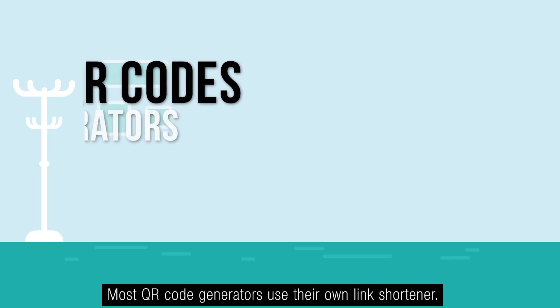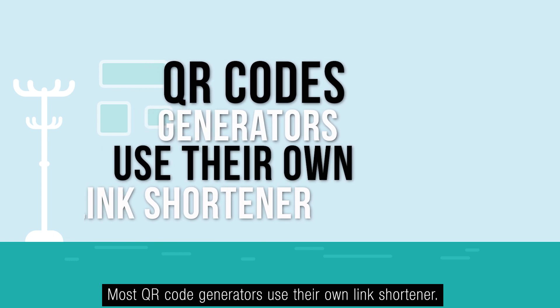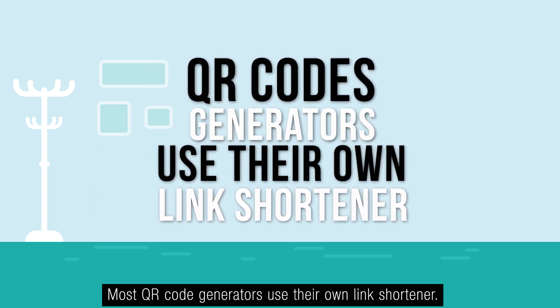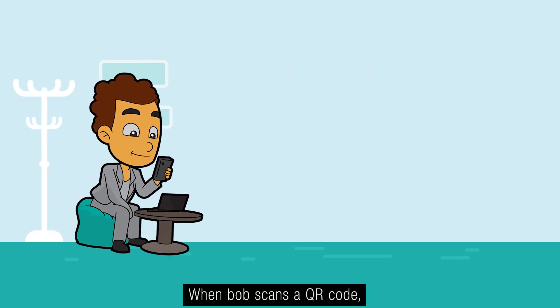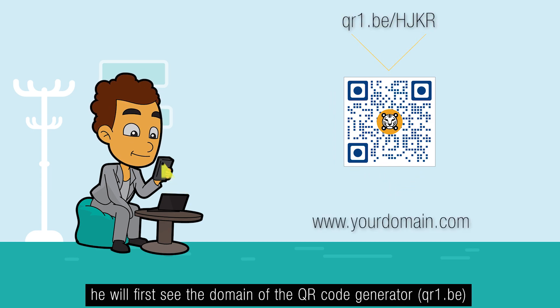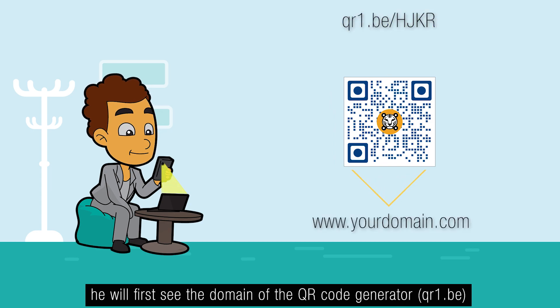Most QR code generators use their own link shortener. When Bob scans a QR code, he will first see the domain of the QR code generator, such as qr1.be.